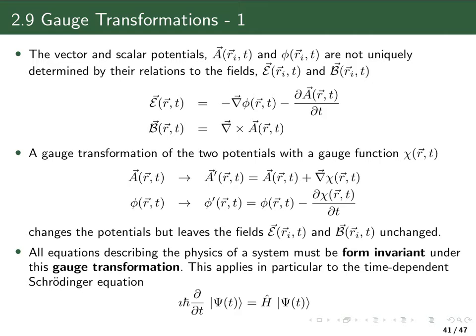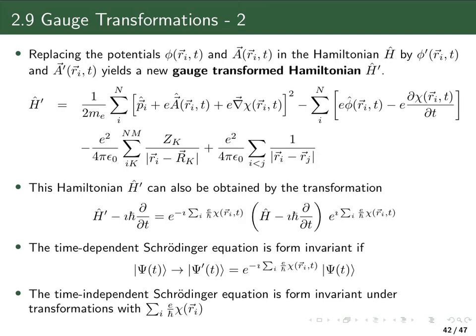All equations describing the physics of our system must be form invariant under such gauge transformations, because the physics cannot be changed. The observable quantities are the electric and magnetic fields, which in our equations we represent by the vector potential and the scalar potential. As long as we don't change the fields, the physics is not changed, and therefore the equations we have are allowed to change their form, but they still must lead to the same physical observations. This form invariance applies in particular to the time-dependent Schrödinger equation.